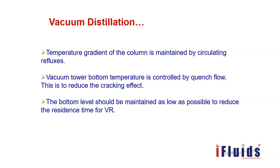The temperature gradient of the column is maintained by circulating refluxes. The vacuum tower bottom temperature is controlled by quench flow. Quench flow is essentially the bottom vacuum residue used to preheat the crude oil, sacrificing its heat. The reduced-temperature vacuum residue is partly recirculated to the tower bottom to control the bottom temperature. If the bottom temperature goes high, there is a possibility of thermal cracking. Also, if the level is maintained too high, the residence time for the vacuum residue increases, which also promotes cracking — so we must maintain an optimum level to reduce residence time.